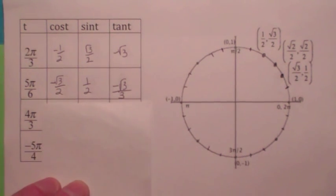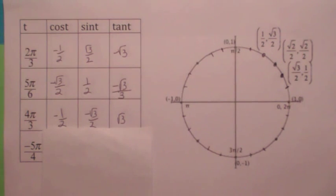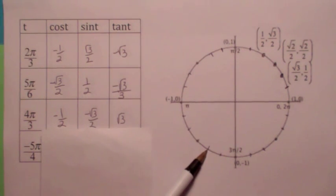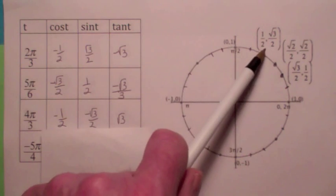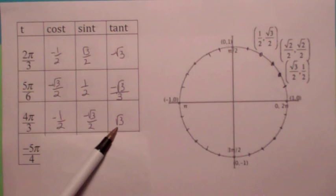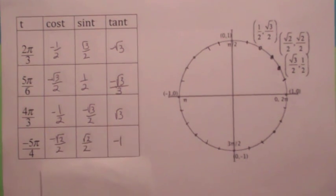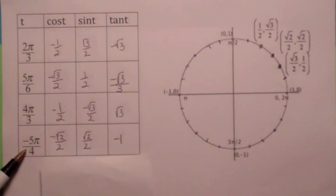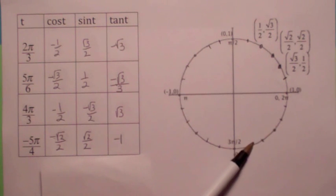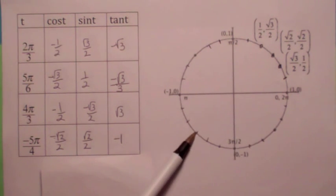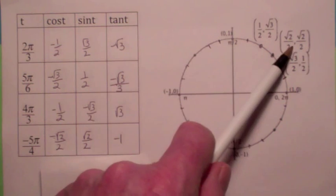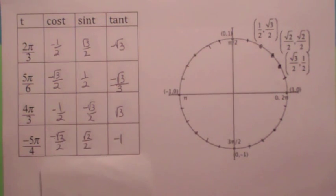For t = 4π/3, you march counterclockwise and end up in the third quadrant. It's the same reference point, but both x and y are negative, so the tangent becomes positive in the third quadrant. For t = -5π/4, remember that means we go clockwise from (1, 0). Counting clockwise: -π/4, -2π/4, -3π/4, -4π/4, -5π/4 puts us in the second quadrant — same reference point, but x is negative, y is positive, so tangent is -1.